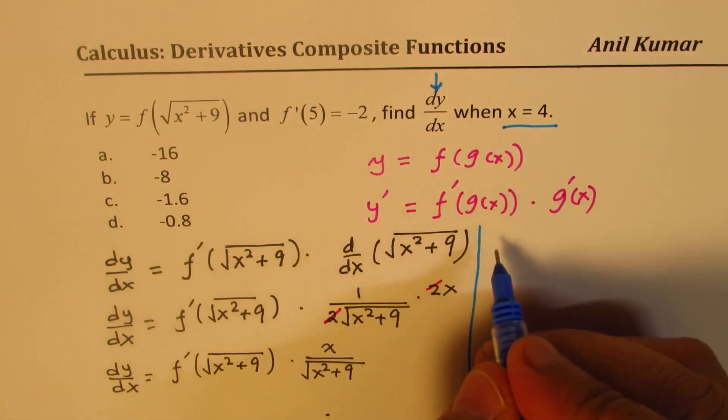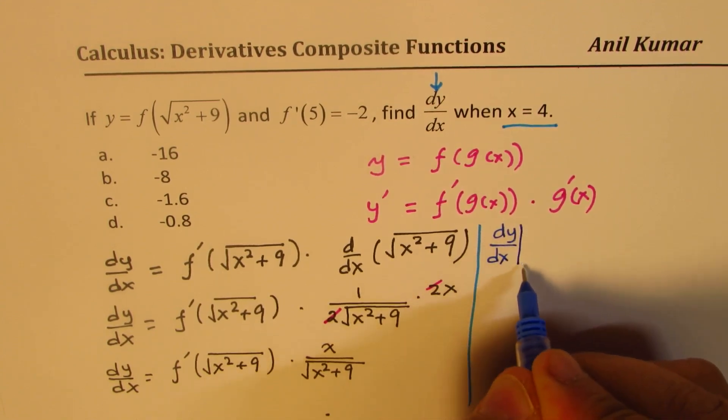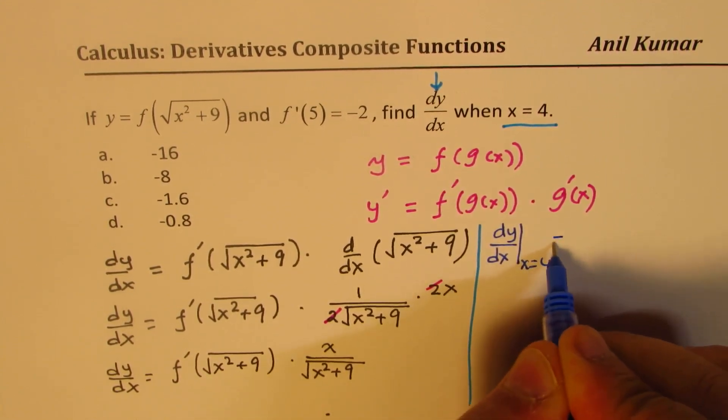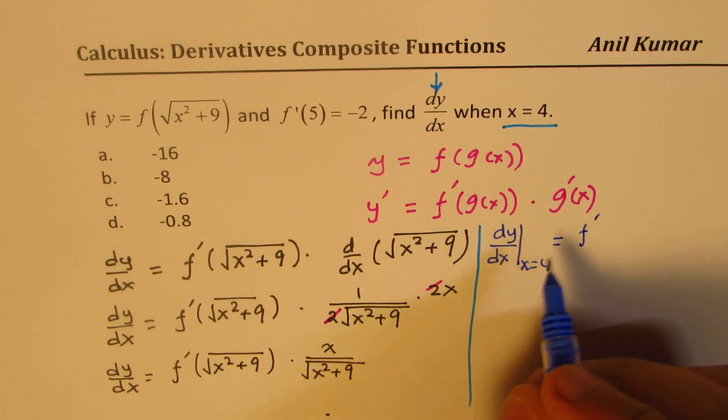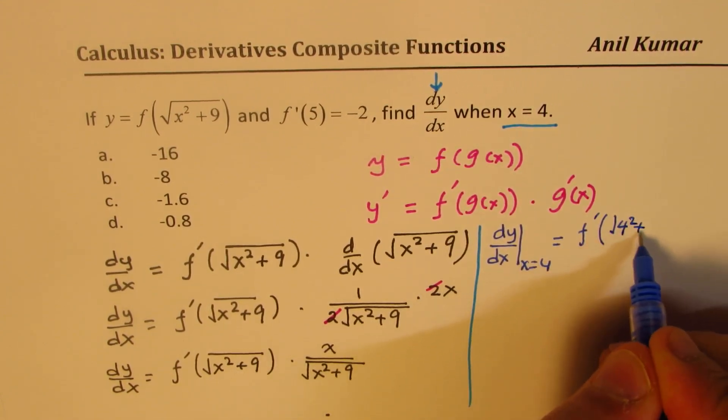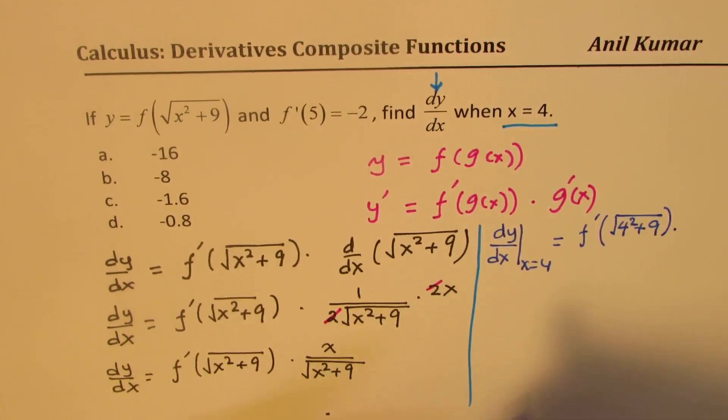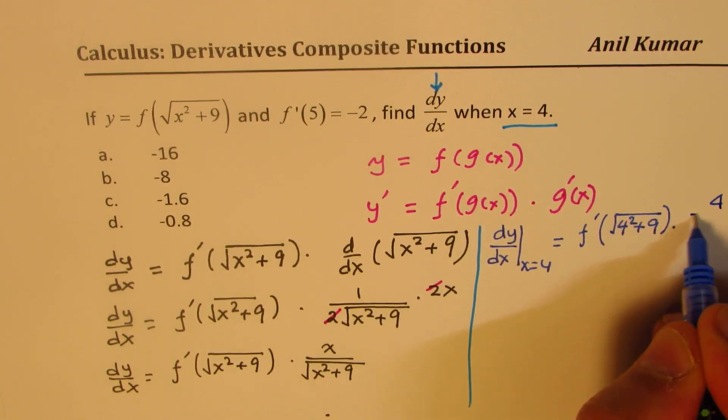So we get dy dx at x equals 4 should be equal to f prime of square root of 4 squared plus 9 times. We'll replace this by 4, right? So we get 4 over square root of 4 squared plus 9.